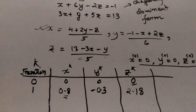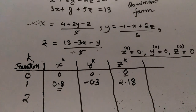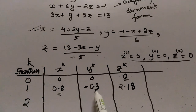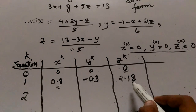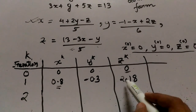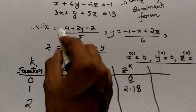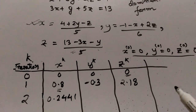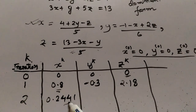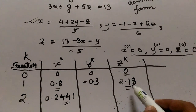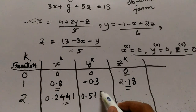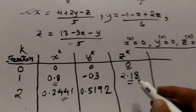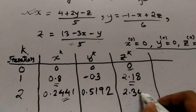In the second iteration, to calculate x I use the previous y=−0.3 and z=2.18, giving x = 0.2441. Then I calculate y using the current x=0.2441 and previous z=2.18, giving y = 0.5192. Finally, using the current x and y values, I calculate z = 2.3497.